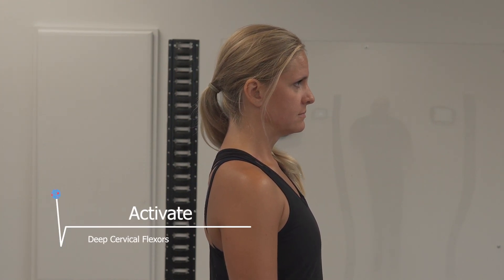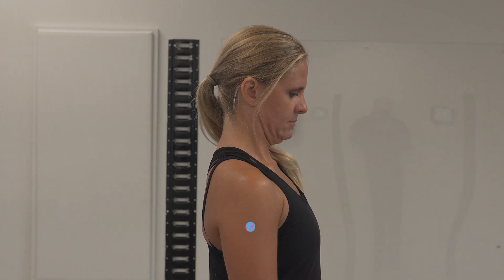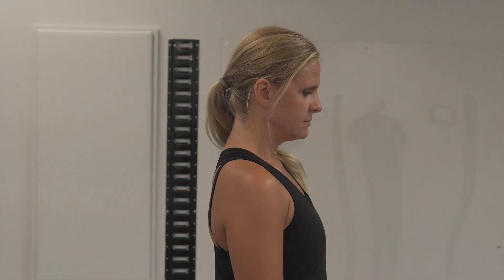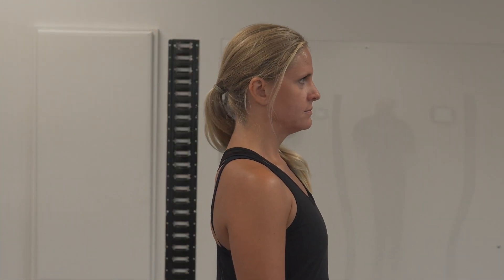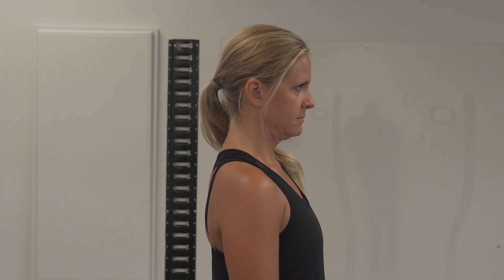Now we're going to target and strengthen the deep cervical flexors. The deep neck flexors consist of the longus colli, longus capitis, rectus capitis, and longus cervicus — all of which help you maintain neck stability and good posture. These muscles are usually weak in relationship to their more superficial partners, the scalenes and sternocleidomastoid. They attach directly to the cervical spine and aid in maintaining proper head and neck posture by flexing the upper neck, nodding the chin towards the chest, and pulling the head backwards on top of the cervical spine. These muscles are often associated with neck pain and dysfunction.